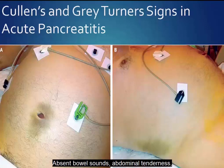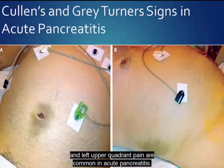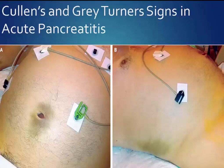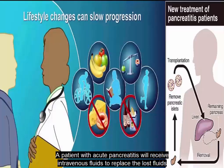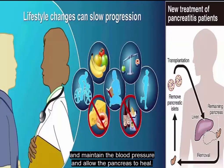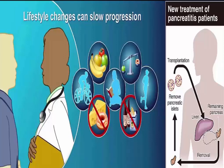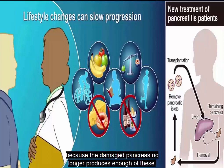Absent bowel sounds, abdominal tenderness, and left upper quadrant pain are common in acute pancreatitis. The patient with acute pancreatitis will receive intravenous fluids to replace lost fluids, maintain blood pressure, and allow the pancreas to heal. Chronic pancreatitis may require pancreatic enzymes and insulin because the damaged pancreas no longer produces enough of these.